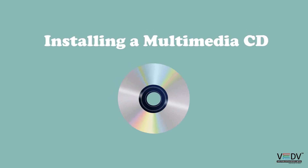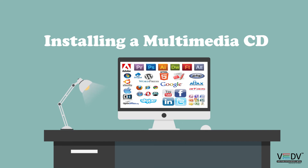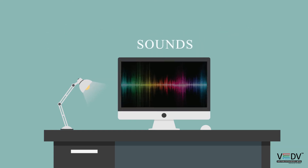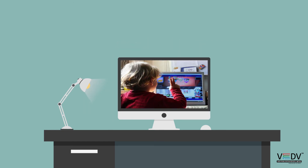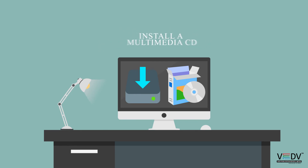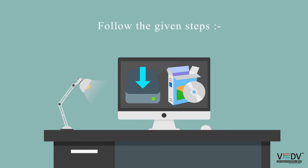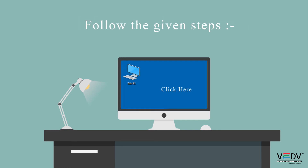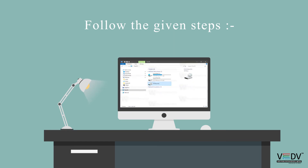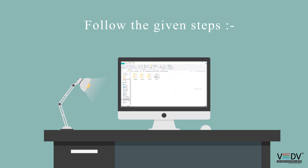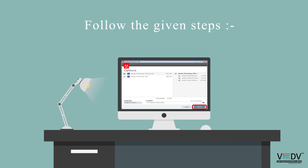Installing a Multimedia CD: कई multimedia software available होते हैं जो बहुत interesting होते हैं क्योंकि ये text, picture, sound, animation और video से बने होते हैं। Children को ये बहुत interesting लगता है। CD install करने के steps: CD को CD drive में insert करें, Desktop पर My Computer icon पर double click करें, CD icon पर double click करें, CD open होगी और contents visible होंगी, setup icon पर double click करें, installation instructions follow करें — software installation complete।